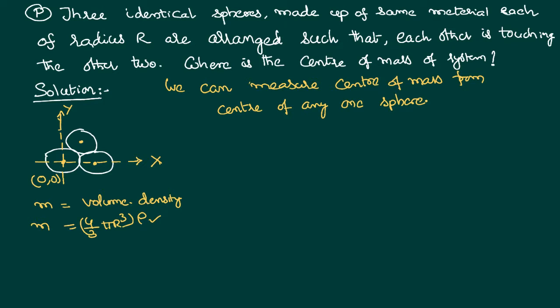Now I want to find the coordinates of each particle. The first sphere is at the origin, so x1 = 0, y1 = 0. For the second sphere, the distance from the origin to its centre is one radius r plus one more radius r, giving a total distance of 2r along the x-axis. So x2 = 2r and y2 = 0.